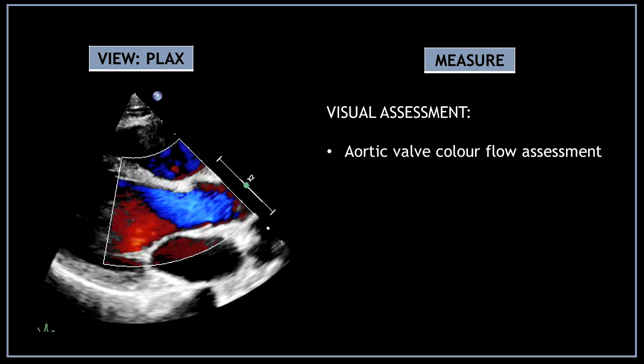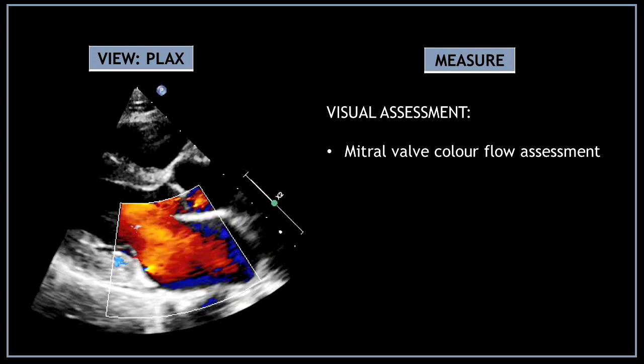On the parasternal long axis view, using color Doppler, do an aortic valve color flow assessment. On the same view, move the color Doppler box to do a mitral valve color flow assessment.